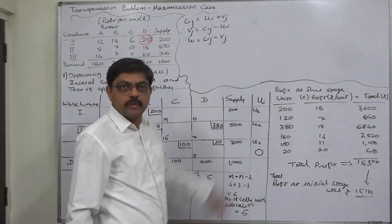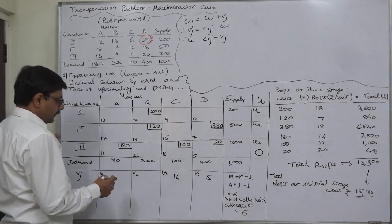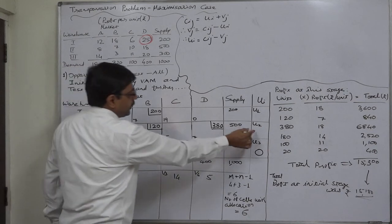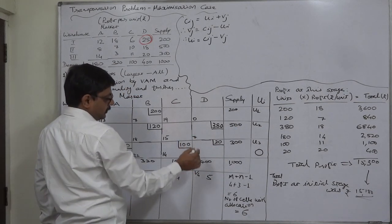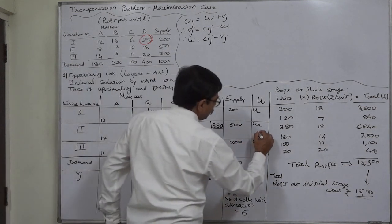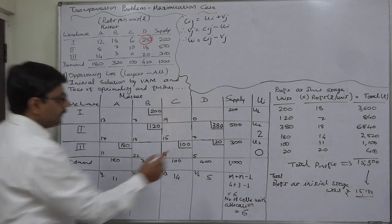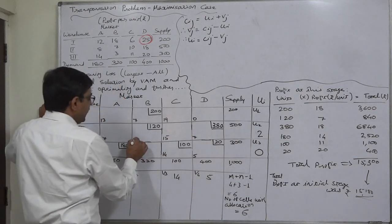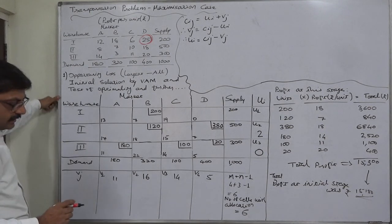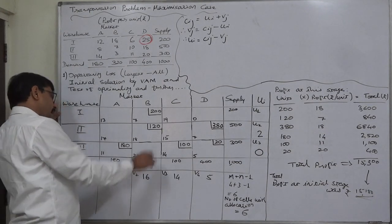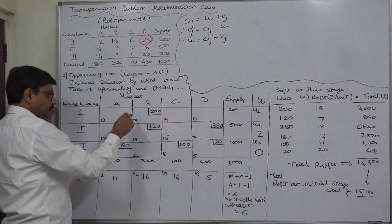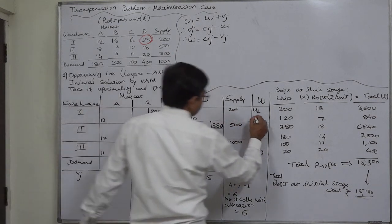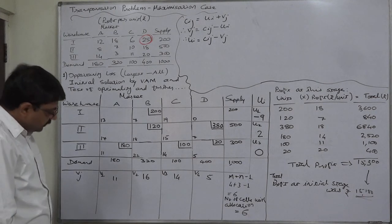Using the occupied cell in row 2: u equals c minus v, so c is 7 and v is 5, giving u2 = 2 (positive). With u2 and the occupied cell in column B: v equals c minus u, so c18 minus u2(2), giving v2 = 16. Then using v2 and the occupied cell in row 1: u equals c minus v, so c7 minus v2(16), giving u1 = minus 9. Now we have all ui and vj values.